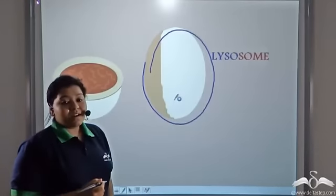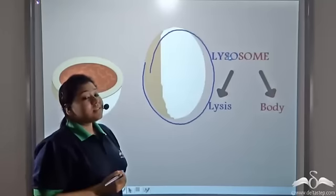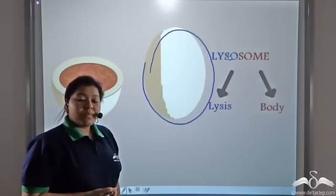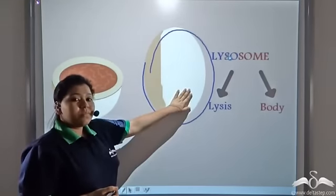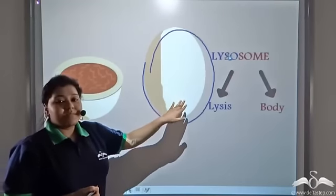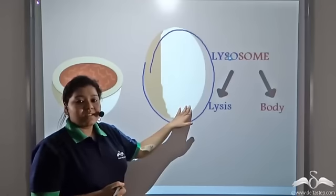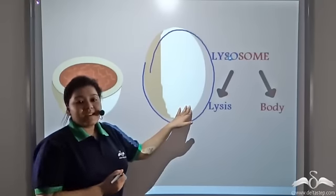Lysosome comes from the word lytic which means breakdown and soma comes from the word soma or body. So lysosome is an organelle that is present in both plant and animal cells and breaks down all the cellular wastages that are generated inside the cell.